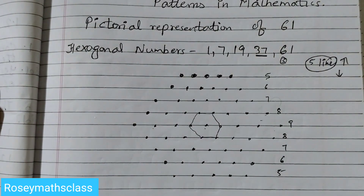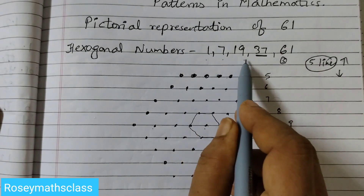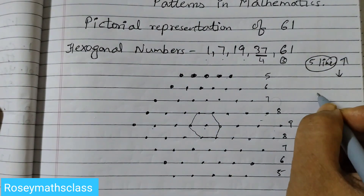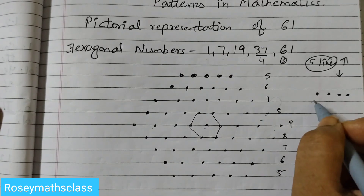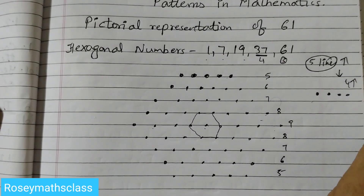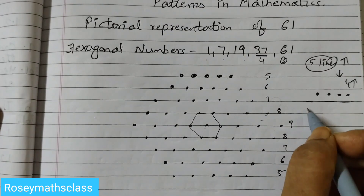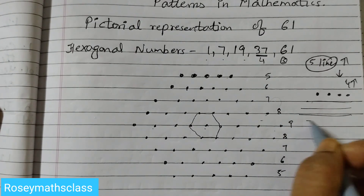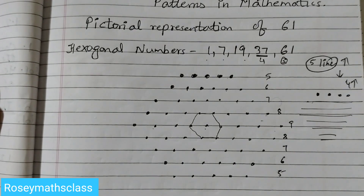Now suppose you want to draw 37. It's the same trick — 37 is in the fourth position, so you start with 4 dots and go on increasing for 4 lines, then 4 lines decreasing. The lines go 4, 5, 6, 7 increasing, then 6, 5, 4 decreasing. If you use this trick you will not go wrong.